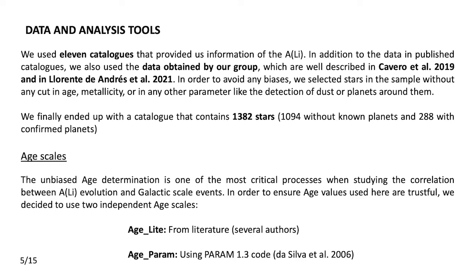The PARAM 1.3 code, presented by Silva and collaborators in 2006, uses effective temperature, the V magnitude, surface gravity, and color to fit isochrones and derive ages. The uncertainties using this technique are quite high, so we can only get hints of the star formation history derived from our sample and these age estimates.